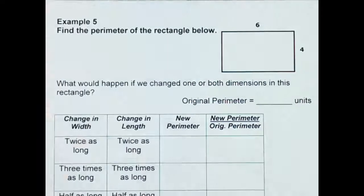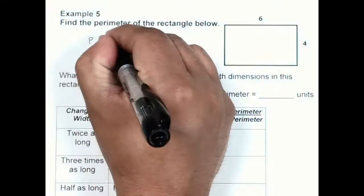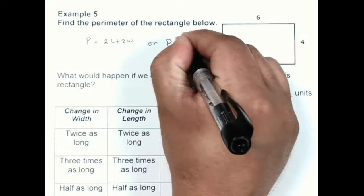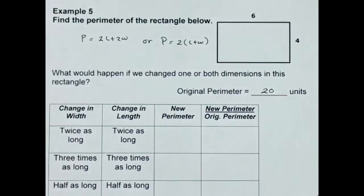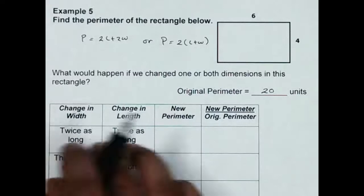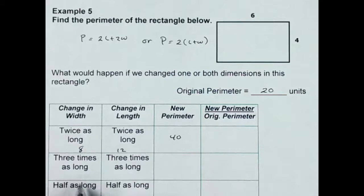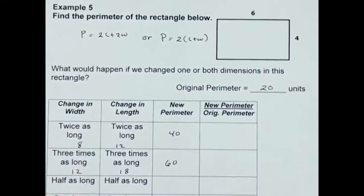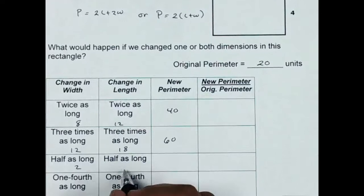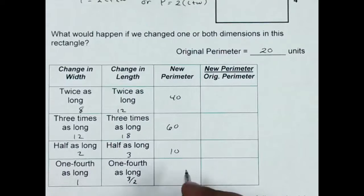Now we're going to look at perimeter and see what happens. I have a 6 by 4 rectangle, and the perimeter formula is 2L plus 2W. If it's 6 by 4, then the perimeter comes out to be 20 units. We're going to do the same thing we did with area: double the length and width gives 8 and 12, so the new perimeter becomes 40. Three times as long gives 12 and 18, which comes out to 60. Half gives 3 and 3, so that becomes 10. One fourth gives 1 and 3 halves, so the perimeter comes out to be 5.